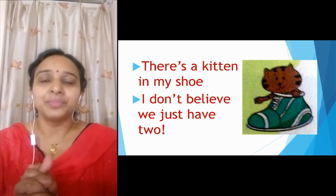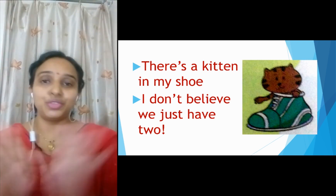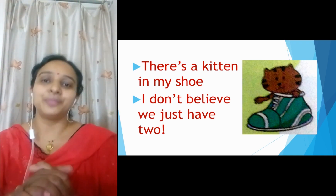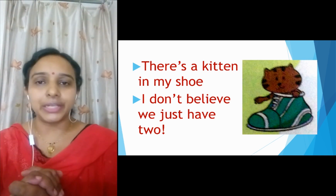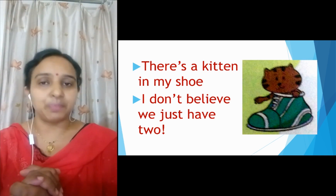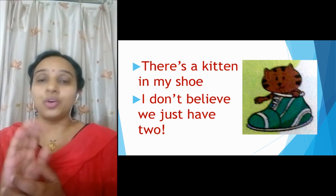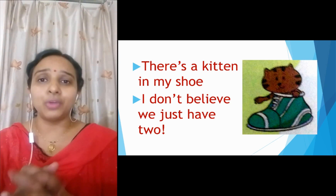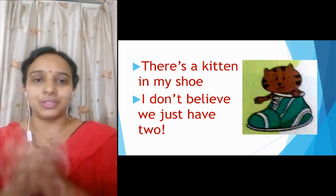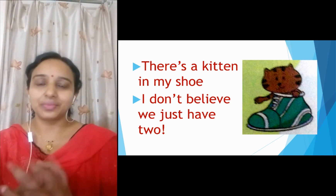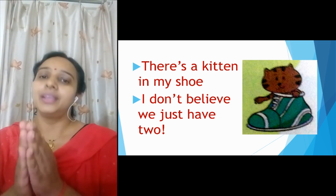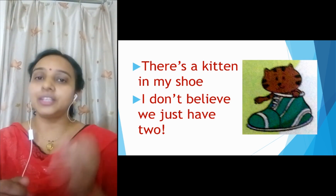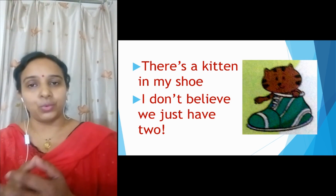So it's a very nice poem. Baut achi poem hai ye — munhe baut maza aaya usko padhke. Have you enjoyed it? Right. So what do you have to do? Glossary aapne learn kar liya hoga. So uski spellings, meanings and poem ko achche se reading karna hai. It's a very nice funny poem about two naughty kittens. So aapko achche se padhna hai, reading practice karna hai, poem ko read karna hai, glossary part learn karna hai, rhyming words learn karna hai.